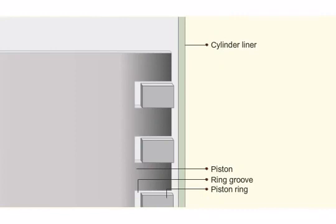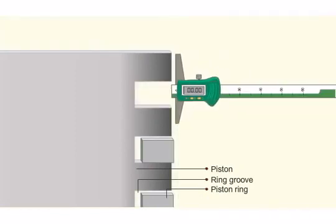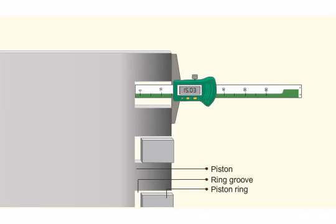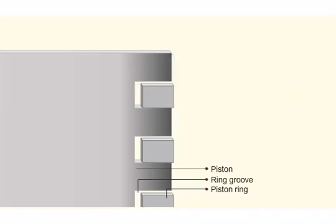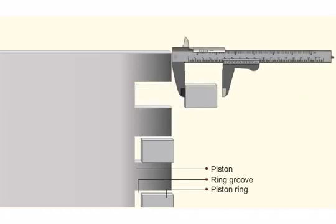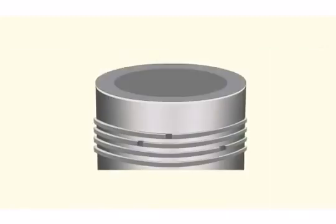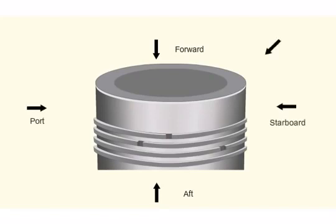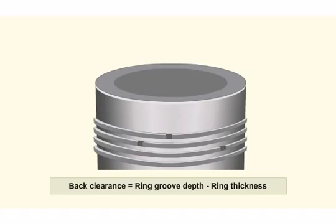To measure back clearance, measure the depth of the piston ring groove by means of the depth gauge. Use vernier caliper to measure the thickness of ring. Take both these measurements in at least six different positions around the groove circumference. The difference between the two readings will give the back clearance.